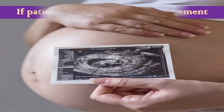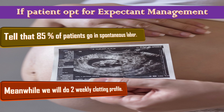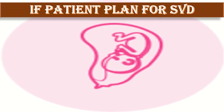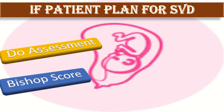If the patient opts for expectant management, tell her that 85% of patients go into spontaneous labor. Meanwhile, do two-weekly clotting profile. If the patient opts for vaginal delivery, do assessment of the lie, presentation, and size of the fetus to rule out any contraindication to vaginal delivery. Do Bishop's score. If Bishop's score is poor, go for induction of labor. If Bishop's score is more than 6, give infusion of oxytocin. If it is less than 6, plan prostaglandin E2 or misoprostol.